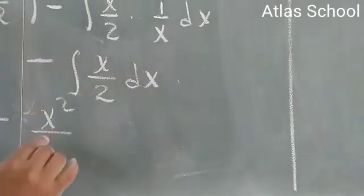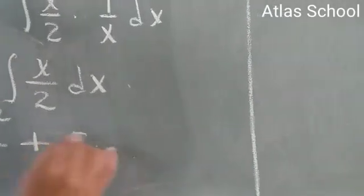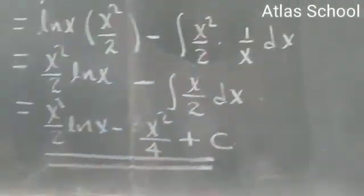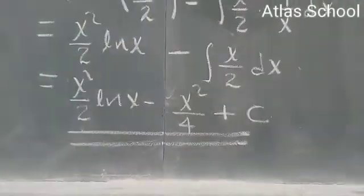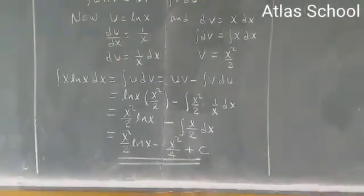Two times 2 it becomes 4. Plus constant of integration c. The solution for the given integral. So such types of techniques of integration is called integration by parts.